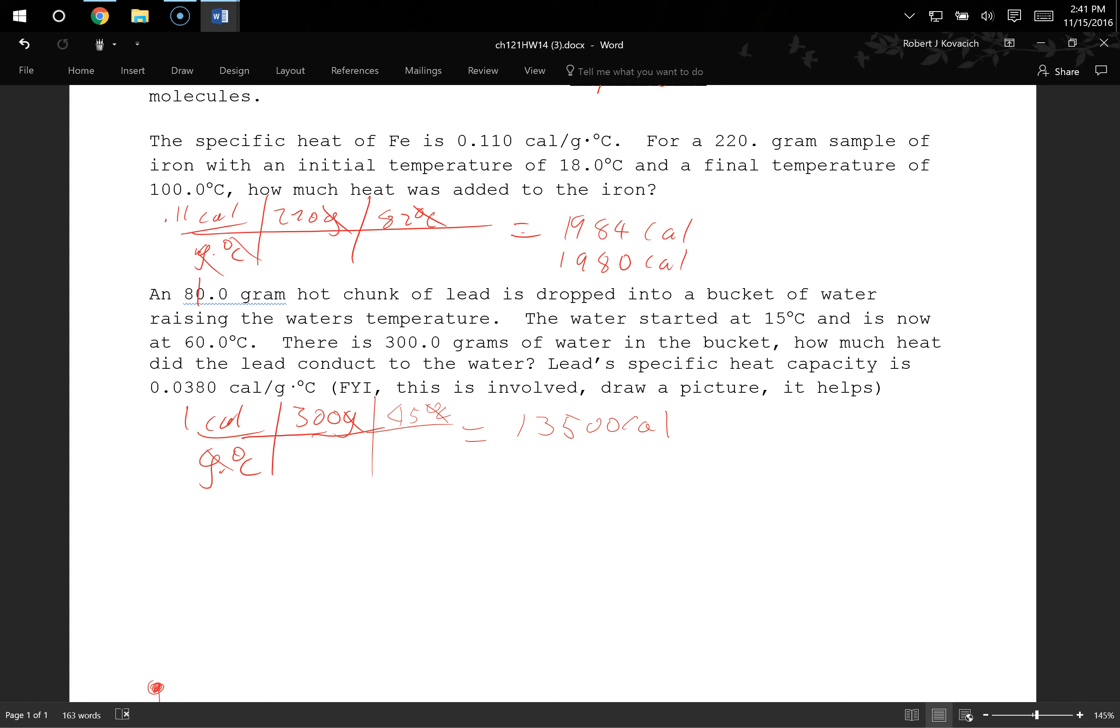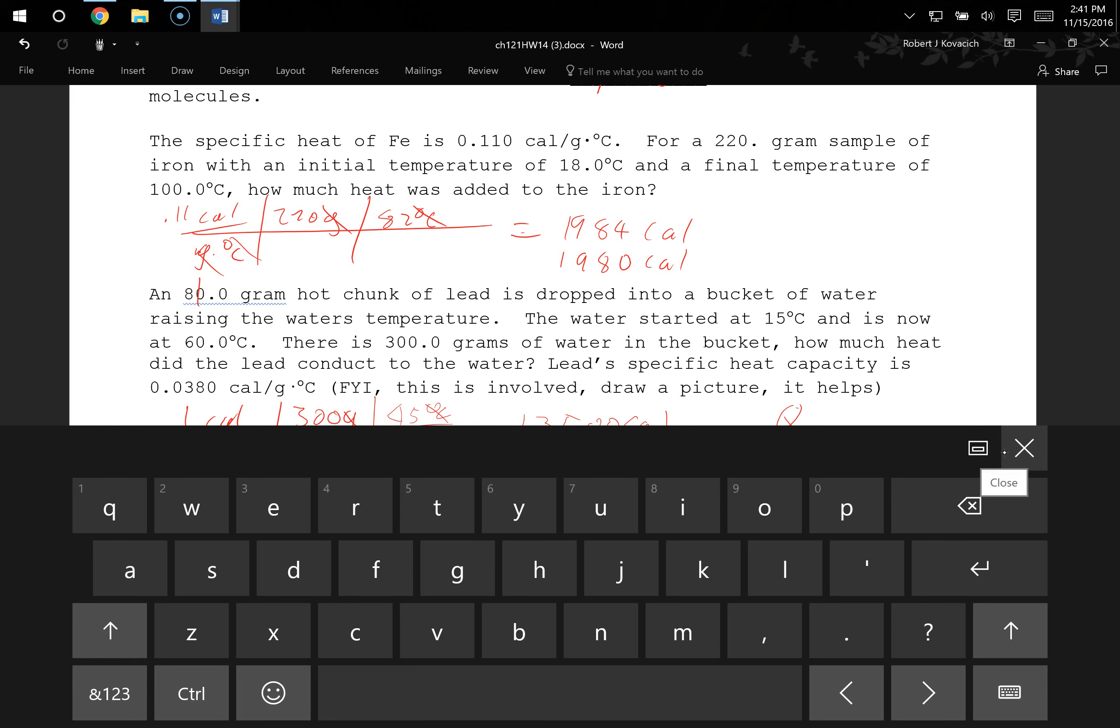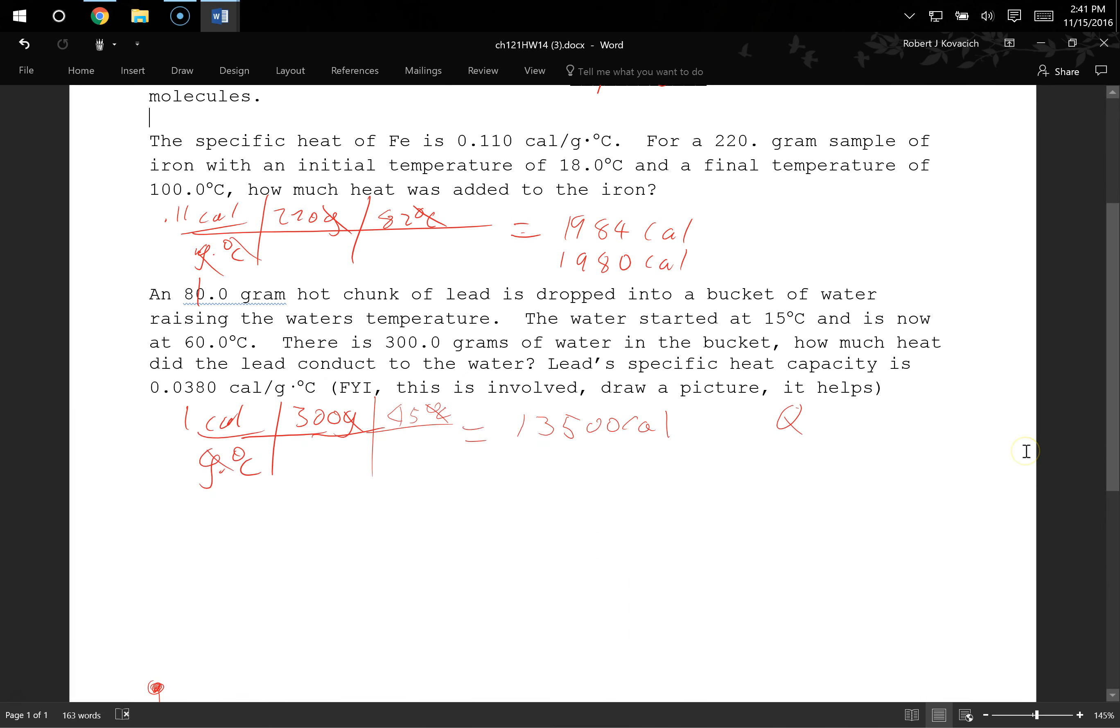So I think it's 10,500 calories. Oh, it's 13. Okay. I'm just trying to remember from yesterday. So 13,500 calories is what the water absorbed. And so then the heat of the lead. Yeah, that's the Q value. So my Q of the lead is going to be negative 13,500 calories. That good?